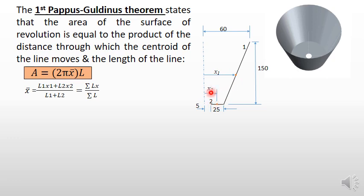x₂ is the distance of the centroid of line 2 from the y-axis, and x₁ is the distance of the centroid of line 1 from the y-axis.